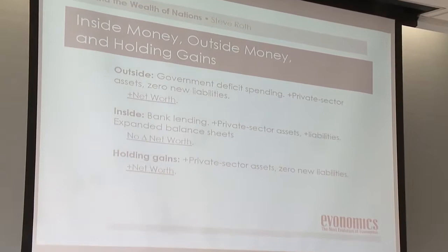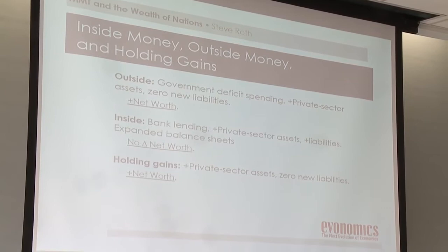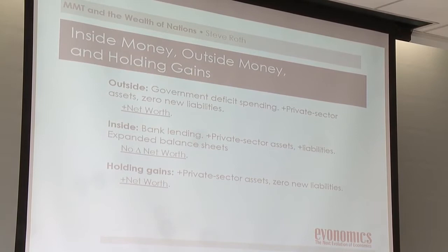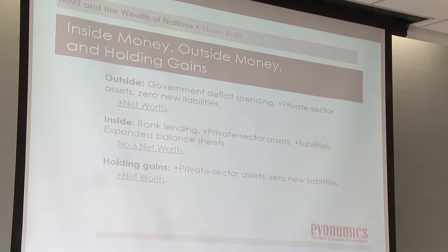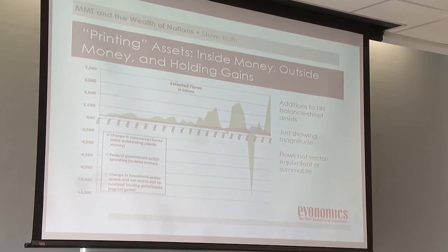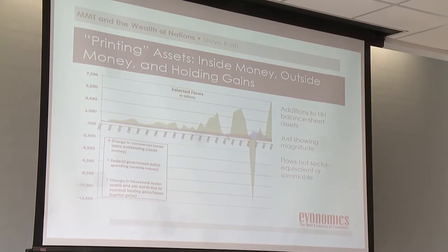Thinking about inside money and outside money: outside money — government deficit spending — creates new net worth because it adds assets. Bank lending creates no change in net worth from that accounting act, though there may be economic effects. Holding gains do exactly the same thing as outside money. Over 30 years, additions to household sector balance sheets from holding gains are five times either government deficit spending or bank lending.